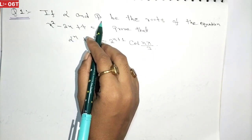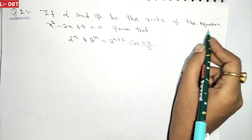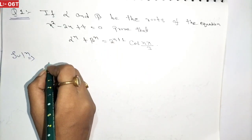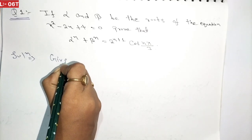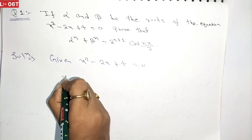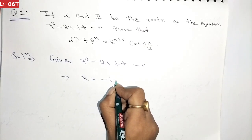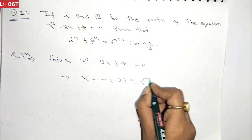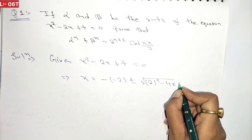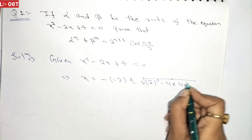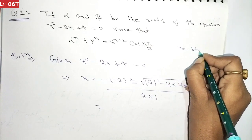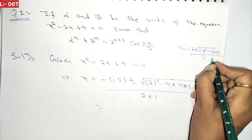So here alpha and beta are the two roots of the equation. First of all, we will solve this quadratic equation. Given x squared minus 2x plus 4 equal to 0. Using the quadratic formula: x equals minus b plus or minus root under b squared minus 4ac, divided by 2a.